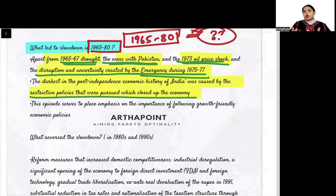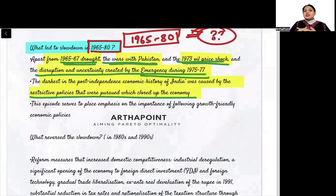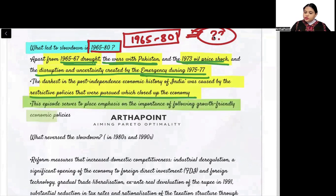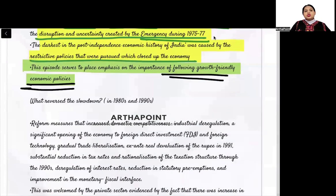There were very restrictive trade policies — who could enter an industry, which firms would get licenses and who wouldn't — it was a very problematic situation with a high system of bribery. The economy was a closed economy; only after 1991 did it become an open economy. That is why this period was called the darkest in post-independence history. This episode places emphasis on the importance of following growth-friendly economic policies.